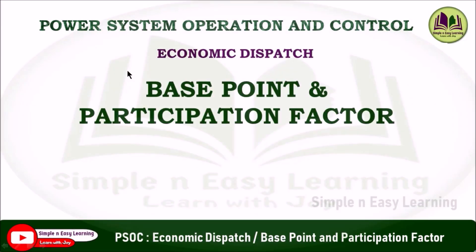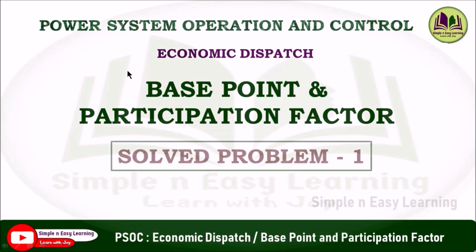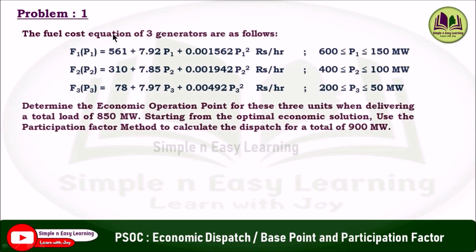Economic dispatch: base point and participation factor method, solved problem 1. The fuel cost equations of 3 generators are given. F1(P1) = 561 + 7.92·P1 + 0.001562·P1² rupees per hour, with generation limits 150 to 600. Similarly for the second and third units. Determine the economic operating point for these three units when delivering a total load of 850 MW.